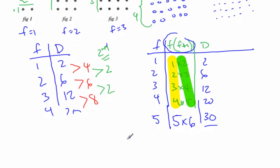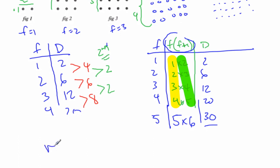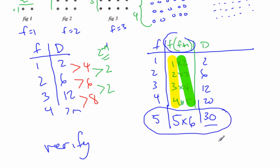Okay, so that would be method two. Still a table, and then we would go and write 'verify by pattern, by number,' and you would do this calculation for that.